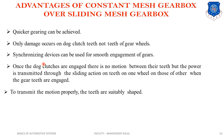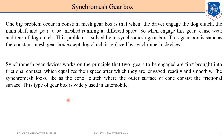Advantages of the constant mesh gearbox over the sliding mesh gearbox: quicker gearing can be achieved, meaning gears can be changed more speedily. Damage occurs only on the dog clutch teeth, not the gear wheel teeth. A synchronizing device can be used for smooth engagement of the gear. Once the dog clutches are engaged, there is no relative motion between their teeth, and power is transmitted through the sliding action on the teeth from one wheel to the other.